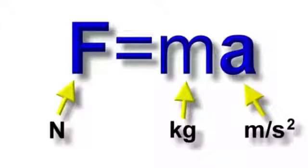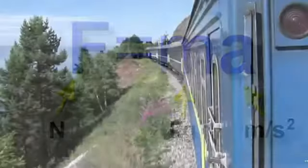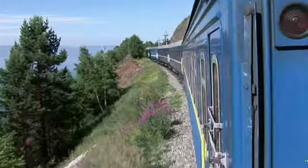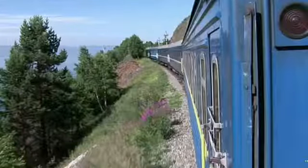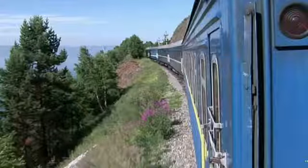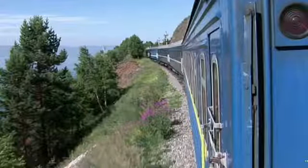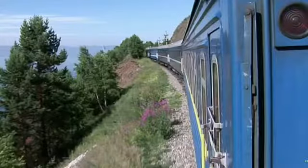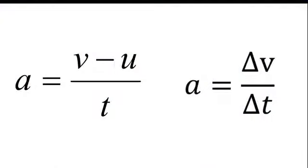Or it might be that the speed doesn't actually change at all, but the direction changes — for example, going round a bend at a constant speed. This is because acceleration is a vector; it's the rate of change of velocity. Velocity is also a vector because it's speed in a particular direction. Acceleration is the change of velocity divided by the change in time: final velocity take away initial velocity divided by the time. So if a mass is staying at the same speed but changing direction as it goes around a circle, the velocity is changing in time and that mass is accelerating.